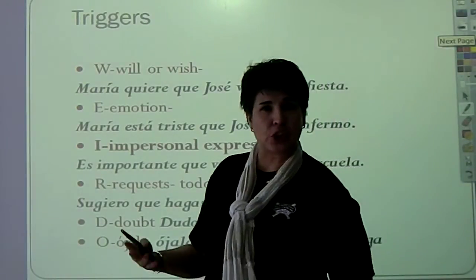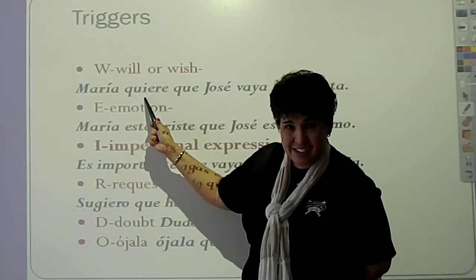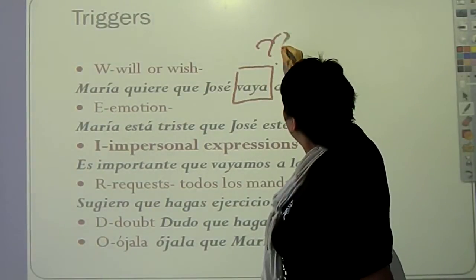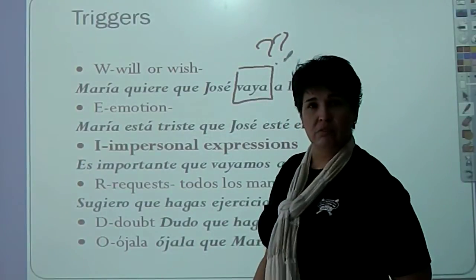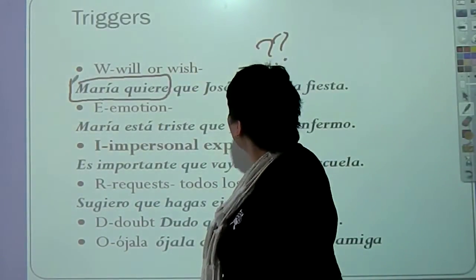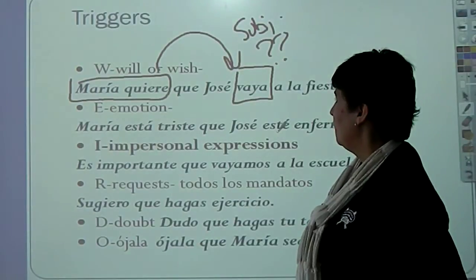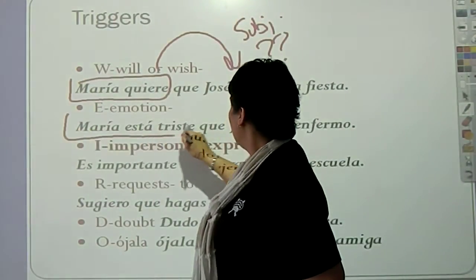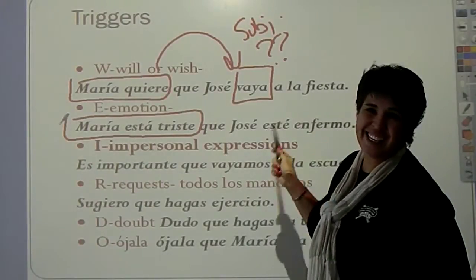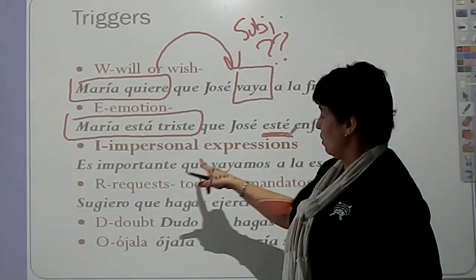What are some of these triggers that we have? We have what we call will or wish, which is what I just showed you. Maria wants Jose to go to the party, but whether or not Jose goes, she has no clue. Whether or not he goes is very doubtful. She wants him to go. So, whenever the first sentence expresses a will or a wish, the second one must be subjunctive. Remember, vaya, vaya, sea, sepa. That's what this is. When the first clause expresses emotion, Maria is sad that Jose is sick. Subjunctive. When you have the first one is emotion.